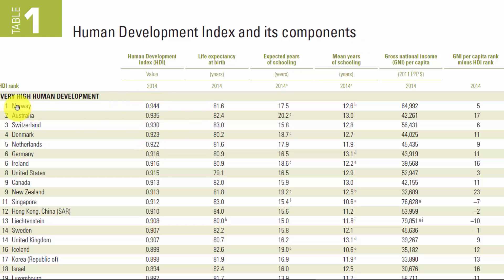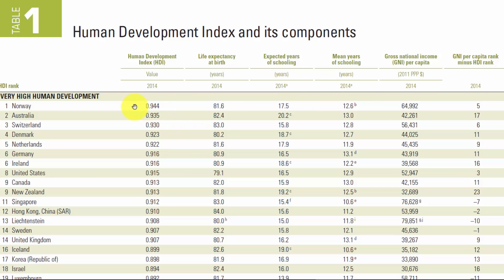They list the index value — Norway at 0.944 — along with life expectancy at birth, expected years of schooling, mean years of schooling, gross national income per capita, and the GNI per capita rank minus the HDI rank. So basically someone sits down and decides what are the important things linked to human development, collects some data, and generates an index.